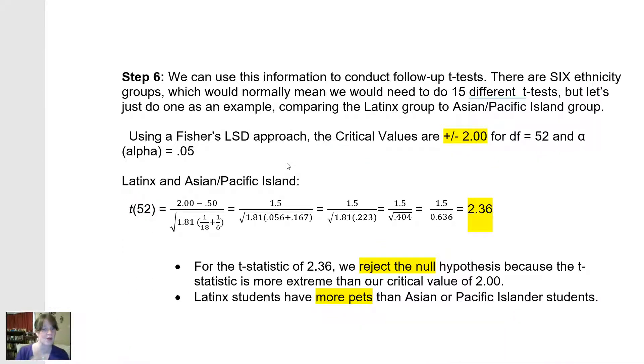So here's how I would plug in those numbers. Here's two pets for the Latinx students, half a pet for the Asian or Pacific Islander students, because I'm going to compare the average number of pets. Here is where I'd put the sample size for the first group, the Latinx group. And here is where I would put the sample size for the second group, the students who identified as Asian or Pacific Islander.